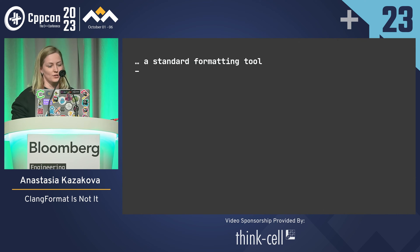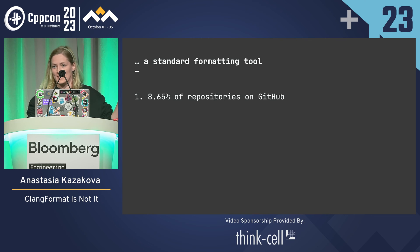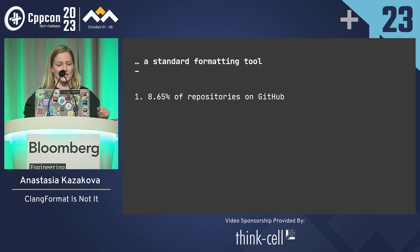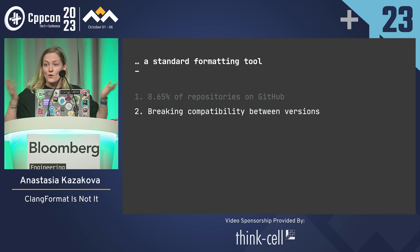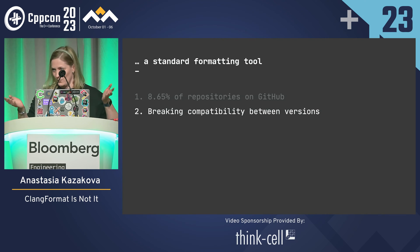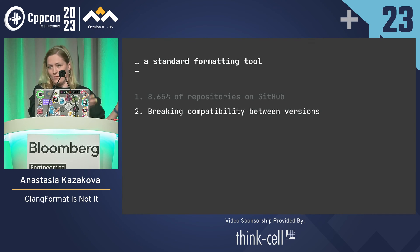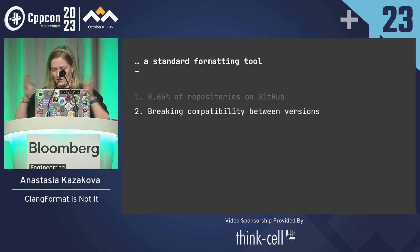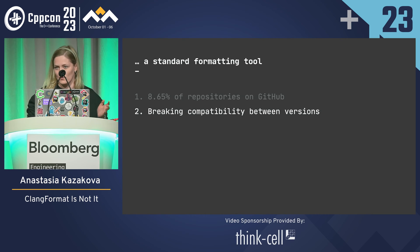So it's truly a standard tool when we only have about 8% of repositories with the config inside? I don't think so. Also, ClangFormat is known for breaking compatibility — especially when they take a parameter which is Boolean and then convert it to an enumeration, and everything is just broken. So companies just stick to one specific version of ClangFormat on their CI and never upgrade it.